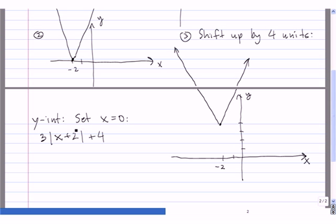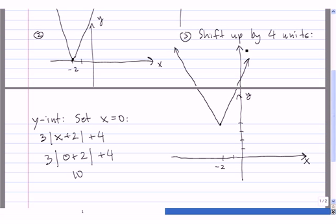And we substitute 0 in for x. And this is equal to 3 times 0 plus 2 is 2. Absolute value of 2 is 2. So 3 times 2, 6 plus 4 is 10. So that means that the y-intercept is equal to 10. So we'll just draw a makeshift extension of the y-axis, and we'll call this 10.